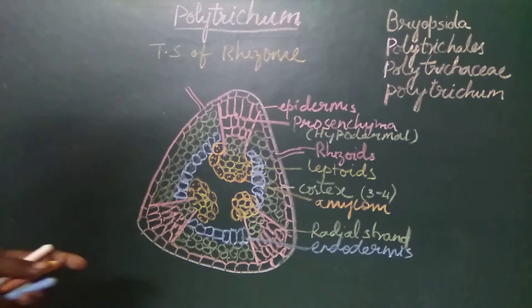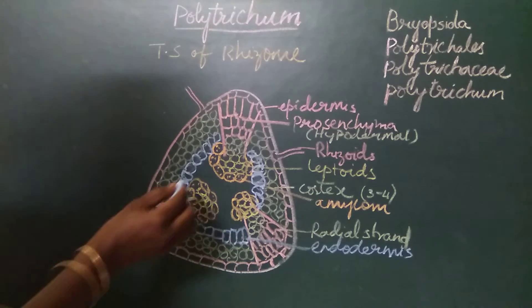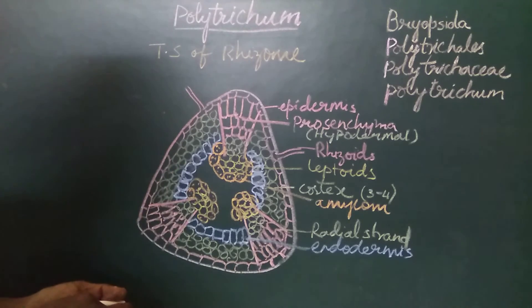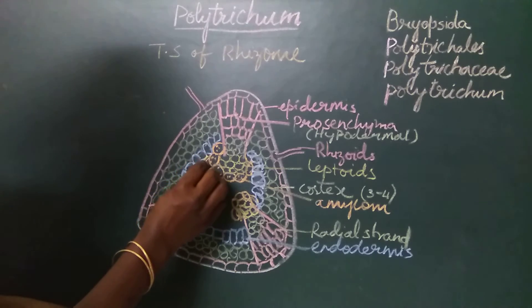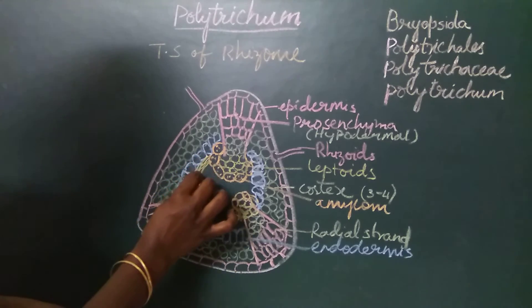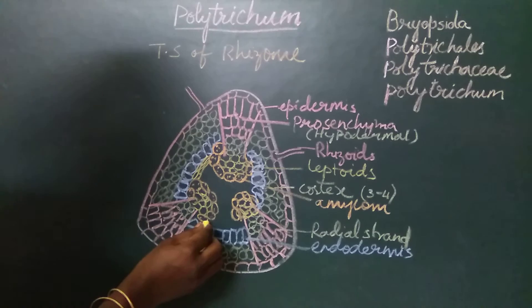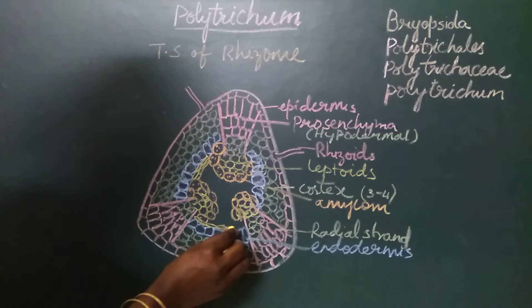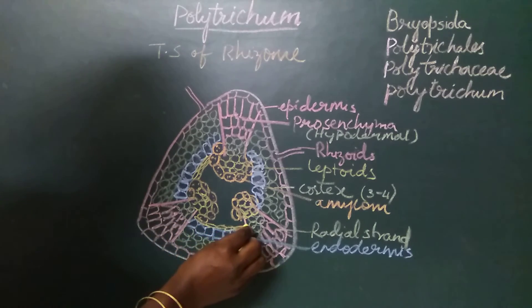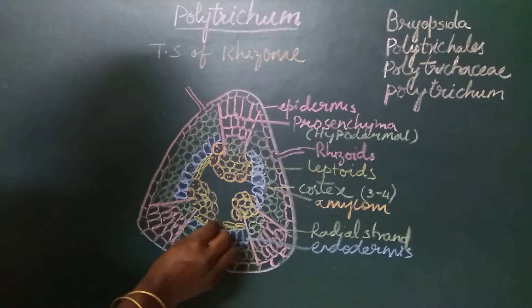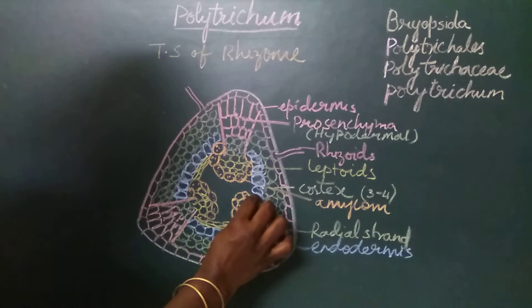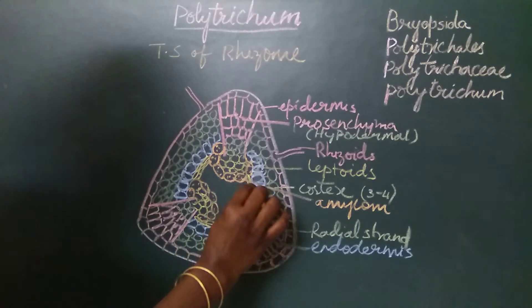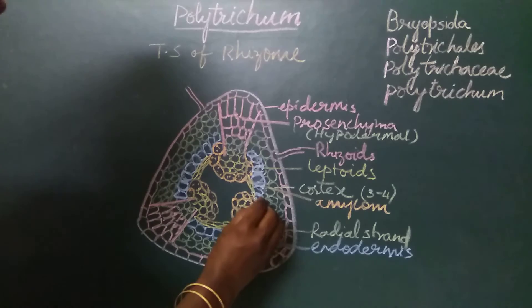Below the endodermis, two to three layers of parenchymatous tissue are seen. These two to three layers of parenchymatous cells form the pericycle.